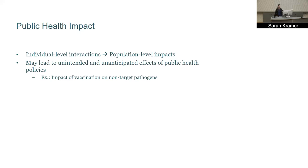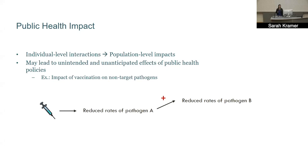An example is vaccination against pathogen A. If we vaccinate, we'll hopefully see reduced rates of pathogen A. If there's a positive interaction between A and B, that's even better — reduced pathogen A means reduced pathogen B. However, if there's a negative interaction and getting pathogen A actually protects against pathogen B, then vaccinating against that first pathogen may actually lead to larger outbreaks of pathogen B, which is something we need to be aware of when using these vaccines widely.